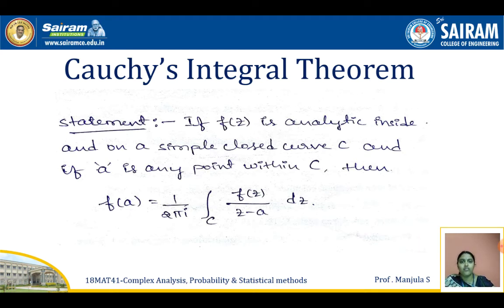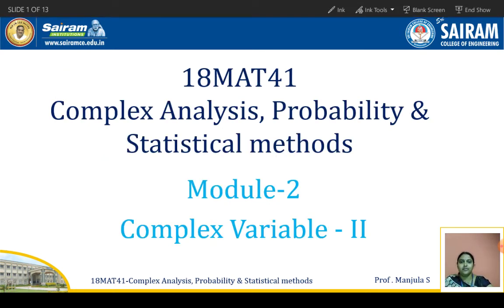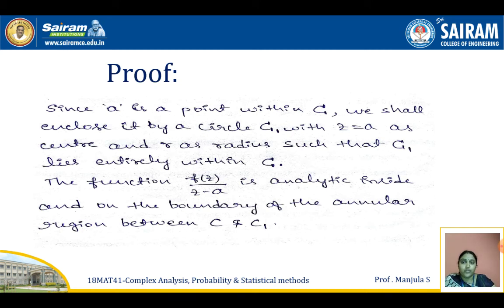Now we have to do the proof of this. Before going to the proof, we have to consider some data. Clearly, the statement says a is any point within the given region C. We will place that same point as the center of a circle C1, with radius r, such that the entire circle C1 lies within the given contour C. Then the function f of z divided by z minus a is analytic inside and on the boundary of the annular region between C and C1.